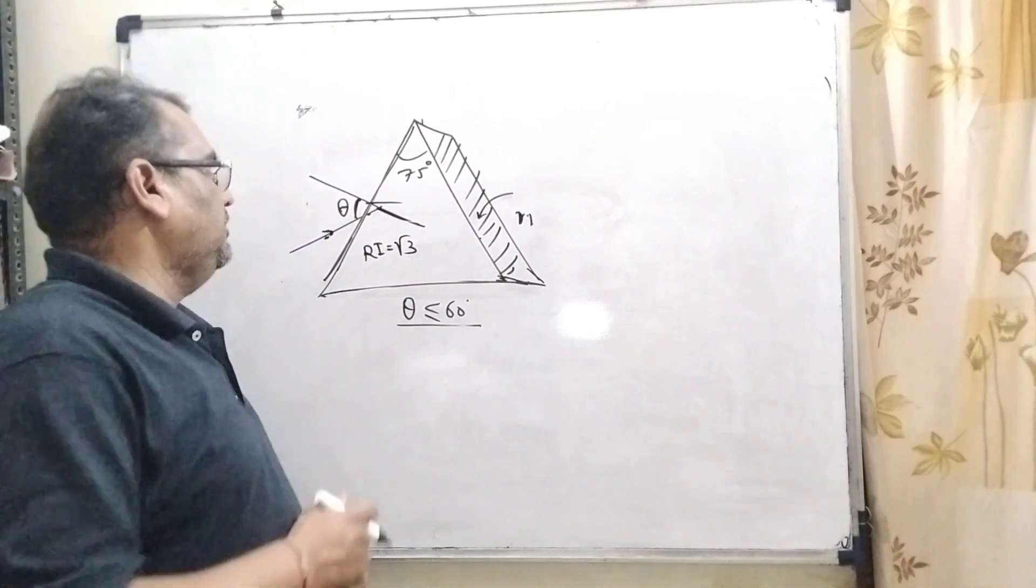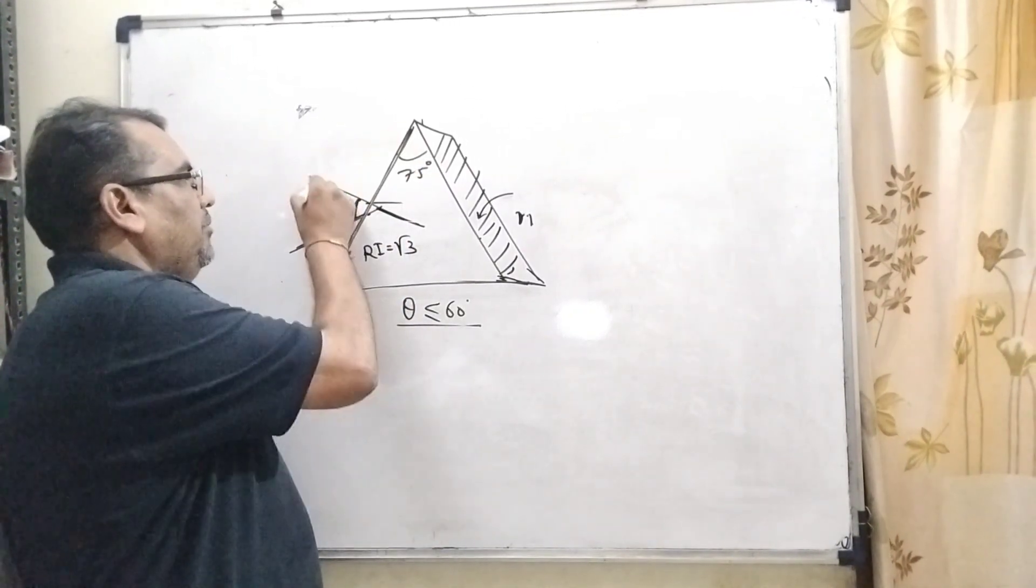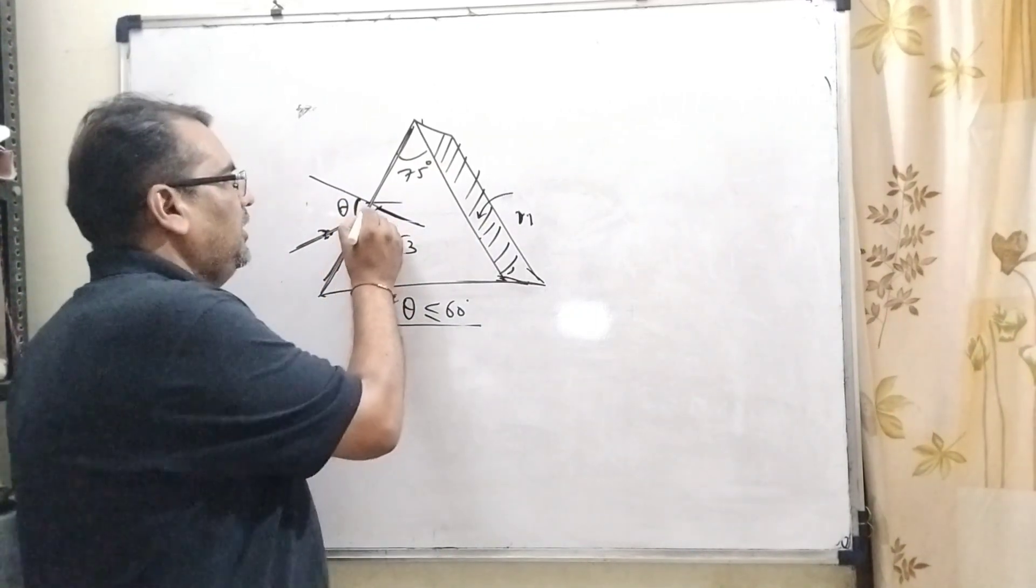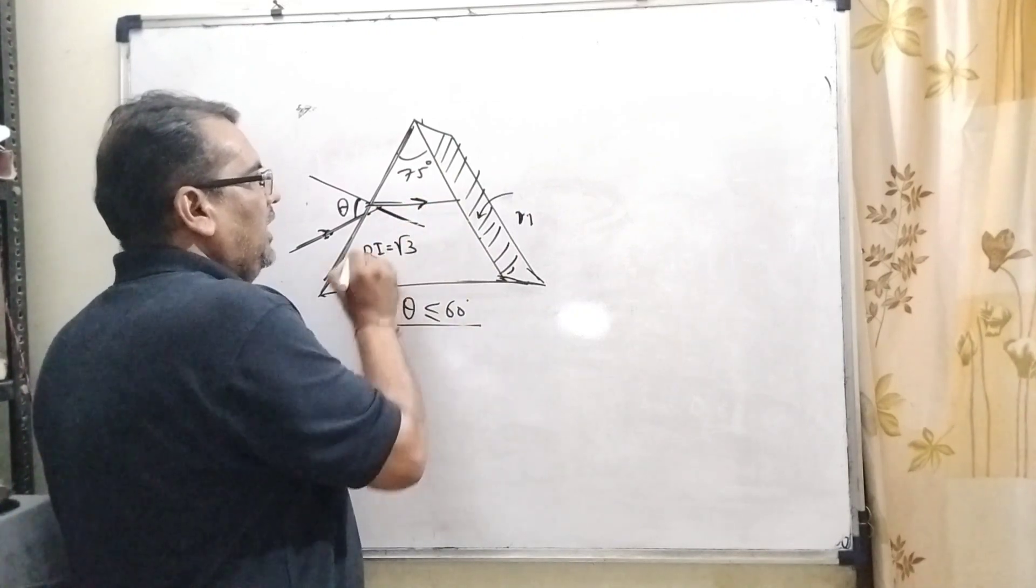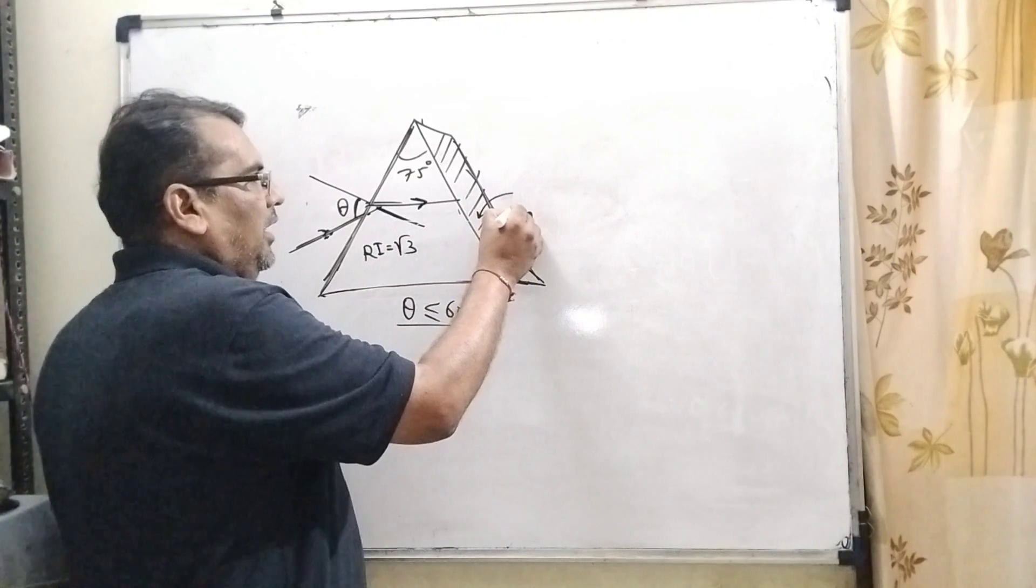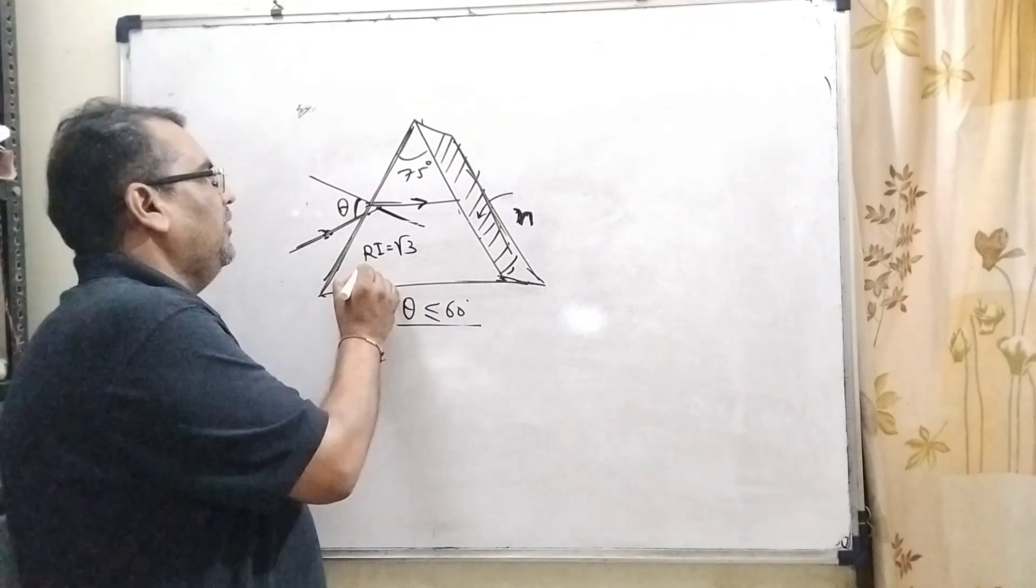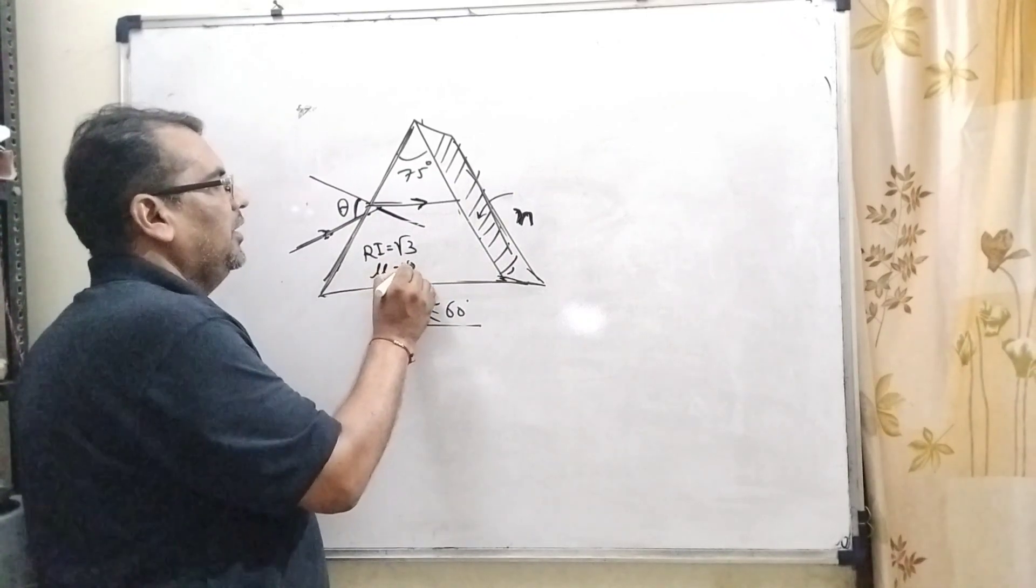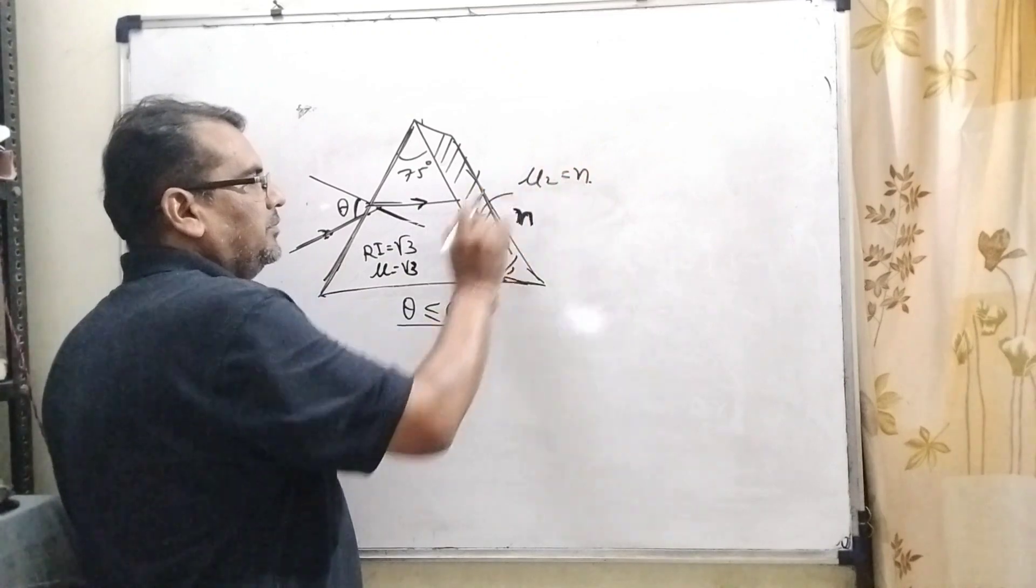Now in this question, here the ray is incident on the first surface making angle theta with the normal. And here the first refraction occurs. And then here this surface is coated and the refractive index is n, which is given. And here the refractive index mu is equal to root 3. And here mu 2 is equal to n.